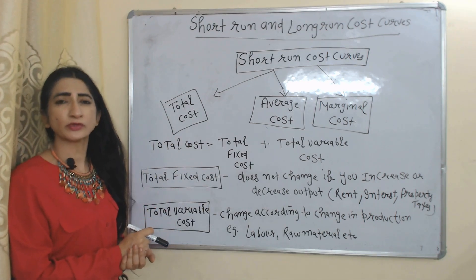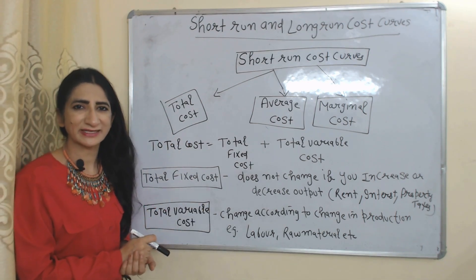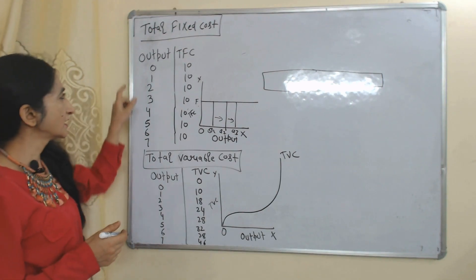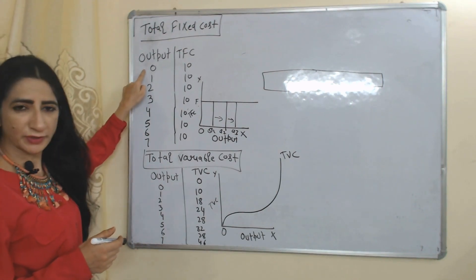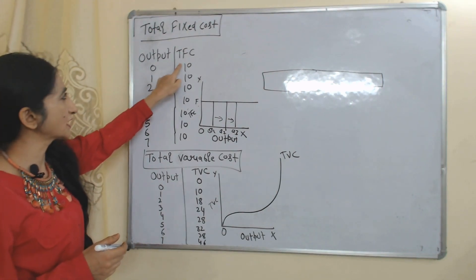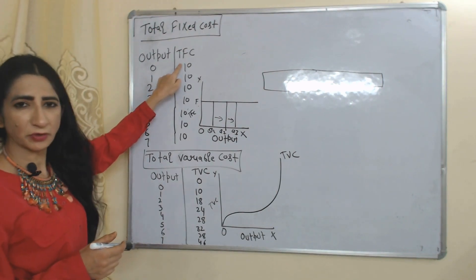On the other hand, total variable cost changes according to change in production — for example, cost of labor, cost of raw material, etc. In the first column we have output and in the second column we have total fixed cost.